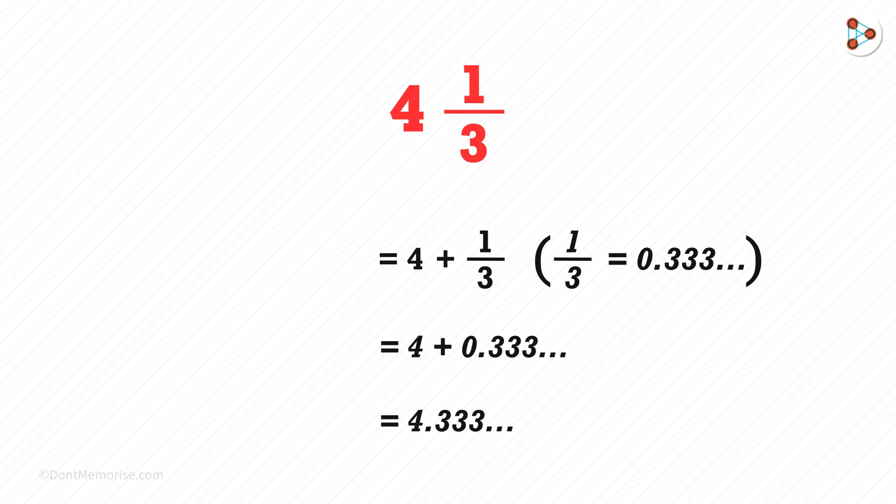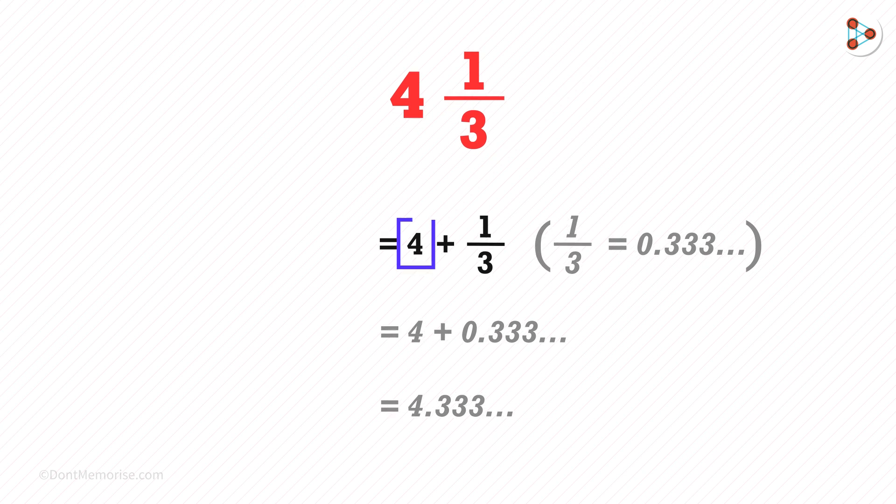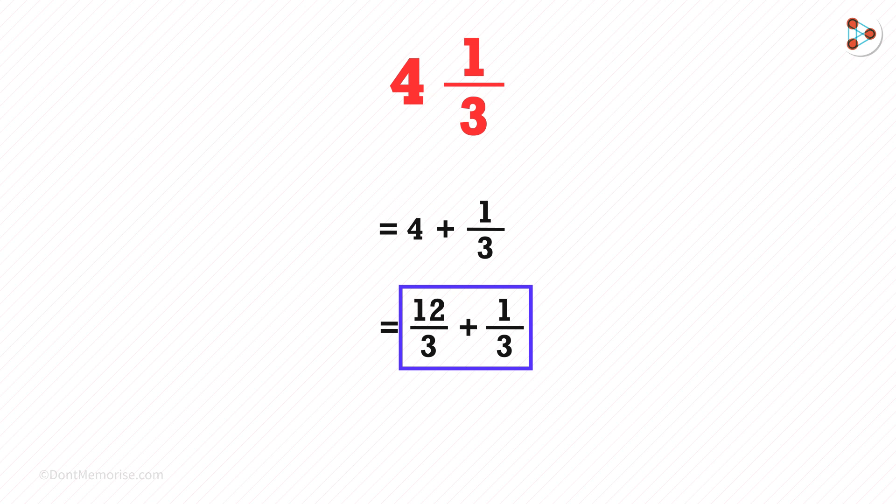We can also write this in the form of an improper fraction. For example, we can write 4 as 12 over 3. After solving this, we get 12 over 3 plus 1 over 3 which is 13 over 3.